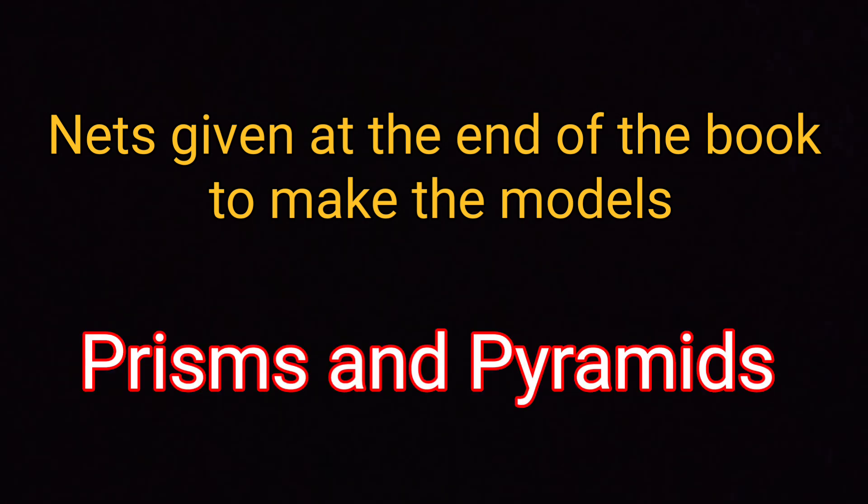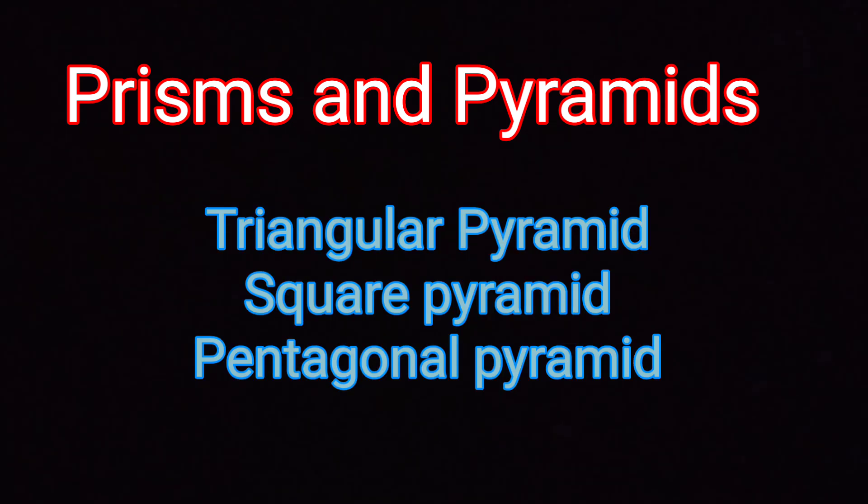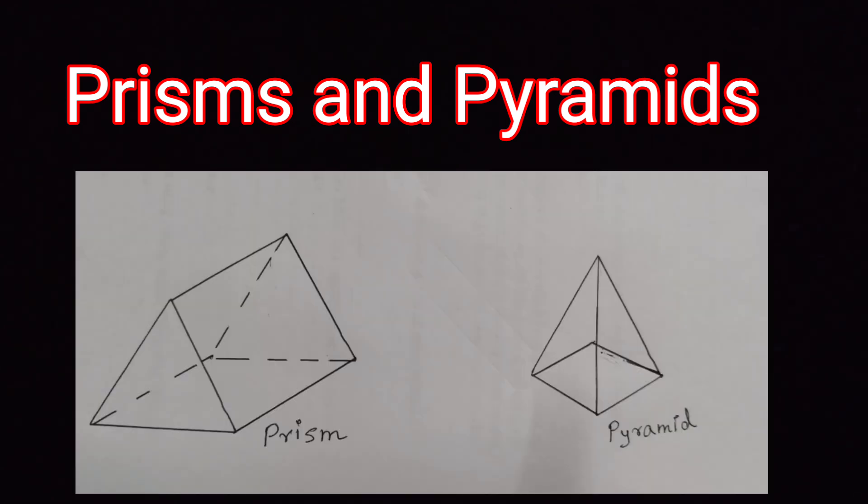So here you will learn about triangular prism, square prism, hexagonal prism and triangular pyramid, square pyramid and pentagonal pyramid. All these nets are given at the end of the book. You need to use these nets and make the models. Your teacher would help you do this.